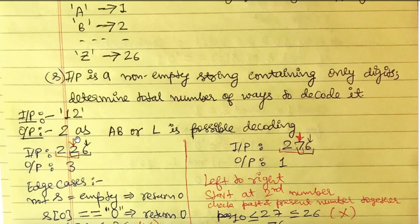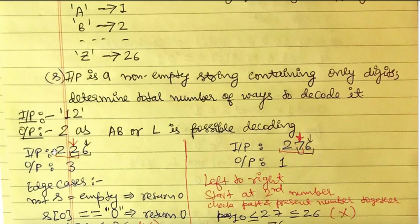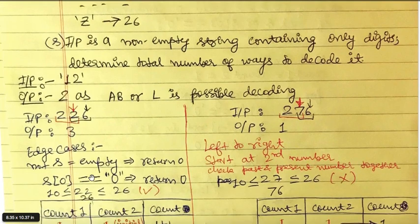Let's consider another example: '226'. One way is to take 2, 2, and 6 all separately. Another way is to take 22 together and 6 separately. A third way is to take 2 separately and 26 together, since Z maps to 26, the highest number we can decode as a pair. So the output is 3.